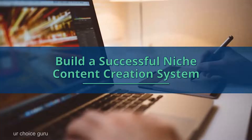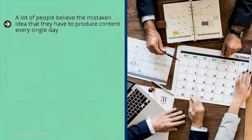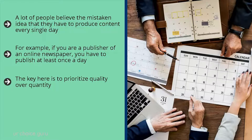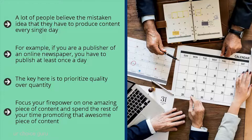Build a successful niche content creation system. A lot of people believe the mistaken idea that they have to produce content every single day — that more content means more Google indexing and more traffic. Absolutely wrong. It depends on your niche. If you're a publisher of an online newspaper, you may need to publish daily. But if your niche is fairly static, like insurance, you should publish once a month at most. The key is to prioritize quality over quantity. Focus your firepower on one amazing piece of content and spend the rest of your time promoting it.